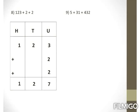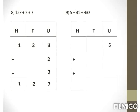Example 9: 5 plus 31 plus 432. Single-digit 5 occupies units place. Double-digit 31: 1 in units, 3 in tens. Third number 432: 2 in units, 3 in tens, 4 in hundreds. Adding units: 5 plus 1 makes 6, and 6 plus 2 makes 8. Tens: 3 plus 3 is 6. Hundreds: 4 comes as it is. Our final answer is 468.